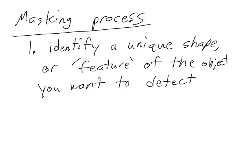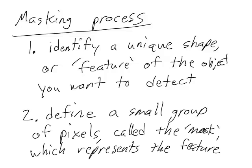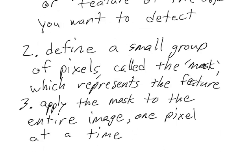So, in conclusion, here's an overview of how the masking process works. Step 1 is to identify a unique shape or feature of the object you want to detect. Then step 2 is to define a small group of pixels, which we will call the mask, which represents the feature. This small group of pixels should add up to close to 0, and each of the pixel values should be a fairly low value, like 1 to 3 or so.